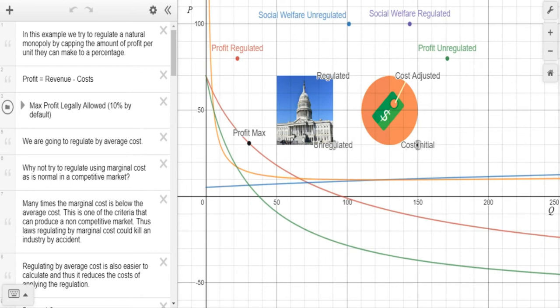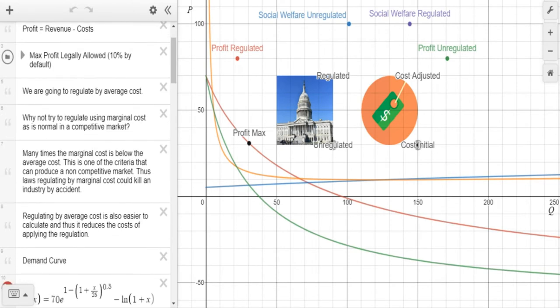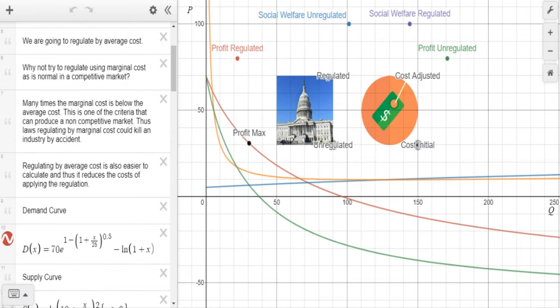Why not try to regulate using marginal costs as is normal in a competitive market? Many times the marginal cost is below the average cost. This is one of the criteria that can produce a non-competitive market. Thus, laws regulating by marginal cost could kill an industry by accident. We should also remember that regulating by average cost is easier to calculate, and thus it reduces the cost of applying the regulation.